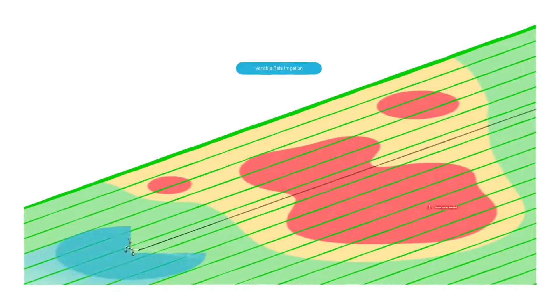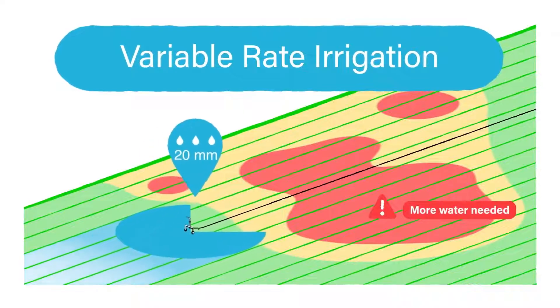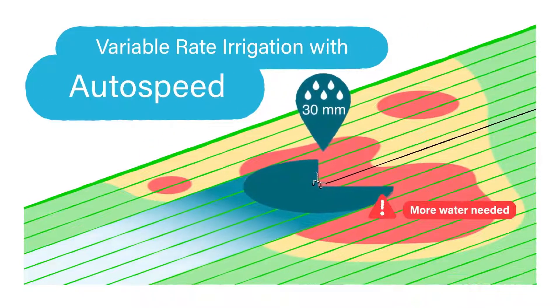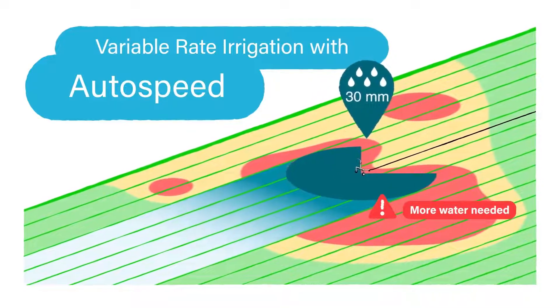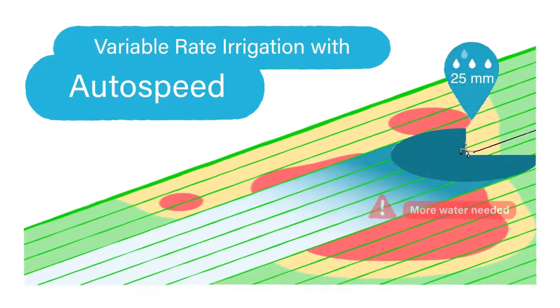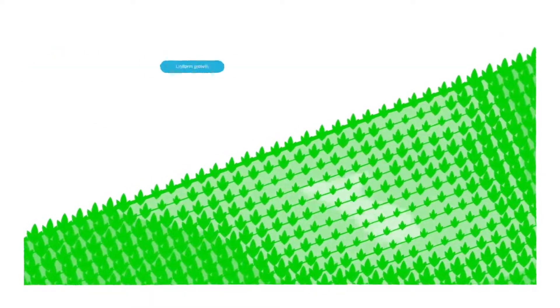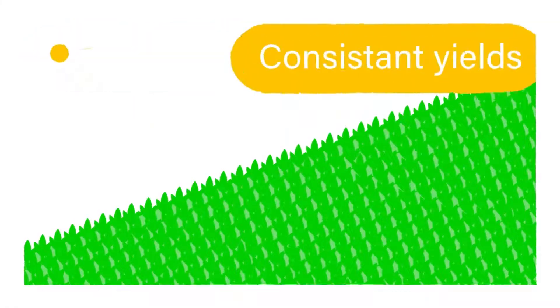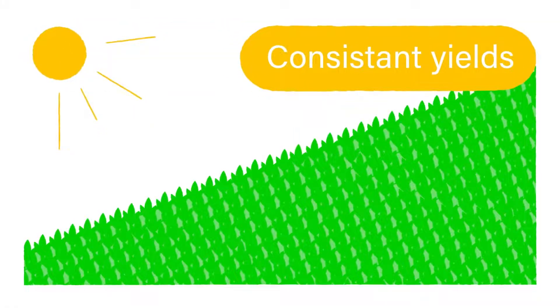With Rain Dancer's variable rate irrigation, you'll put the right amount of water to the right place. Those VRI zones can be drawn manually or can also be imported from third-party tools. This enables you to save water in the areas that require less water and at the same time achieve the most even growth possible.